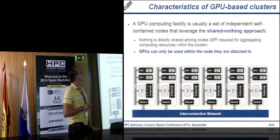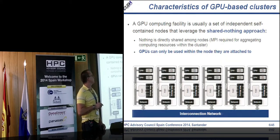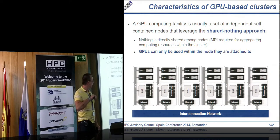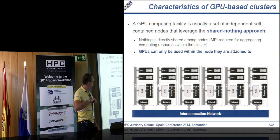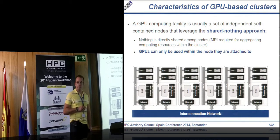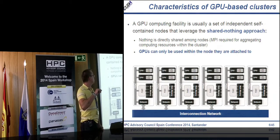In order to understand the problems, we need to understand the nature of GPU clusters. We have several nodes, each with one or more CPUs and several GPUs, interconnected by a network that could be Ethernet or InfiniBand. The main characteristic is that GPUs can only be used within the node they are attached to. If we execute an application on one node, it can only use the GPUs inside that node.